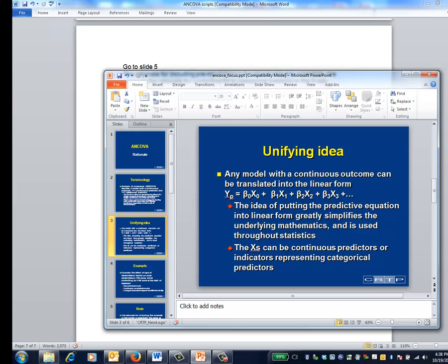Although we've created separate modules for continuous and categorical predictors, it's important to know they can both be covered within a single model. The unifying idea is that categorical predictors can be treated as if they were continuous, once the appropriate indicator variables have been created. One implication of this idea is that some people call every model with a continuous outcome by the same name, usually either regression or ANCOVA. You should be aware of this terminology as you read the medical literature.